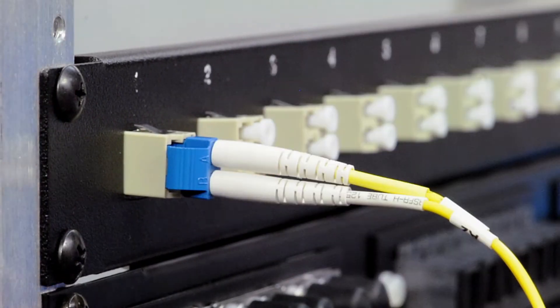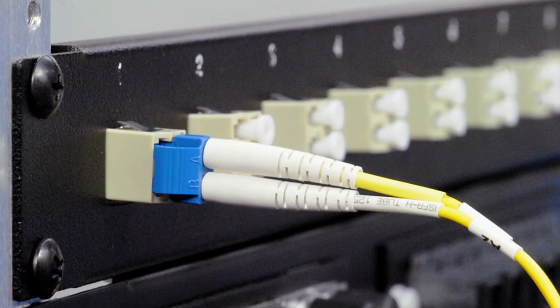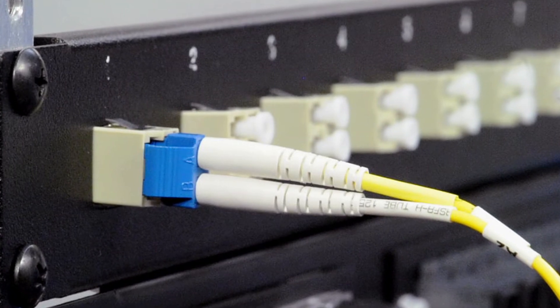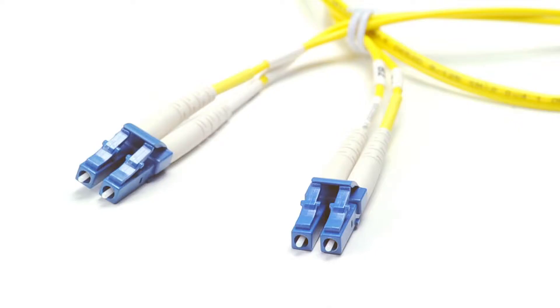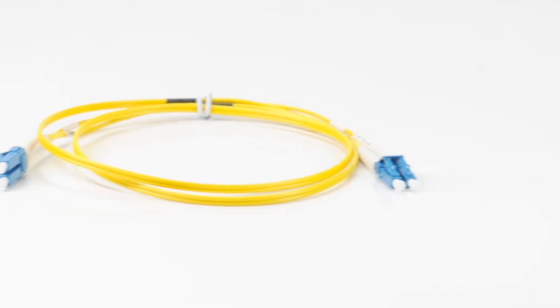LC connectors have a molded plug casing that has a push and pull locking system. It is available in lengths from 1 to 15 meters.